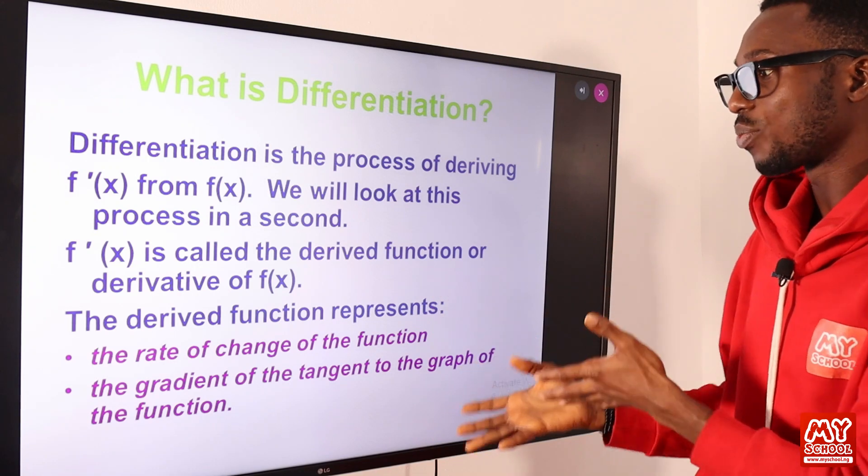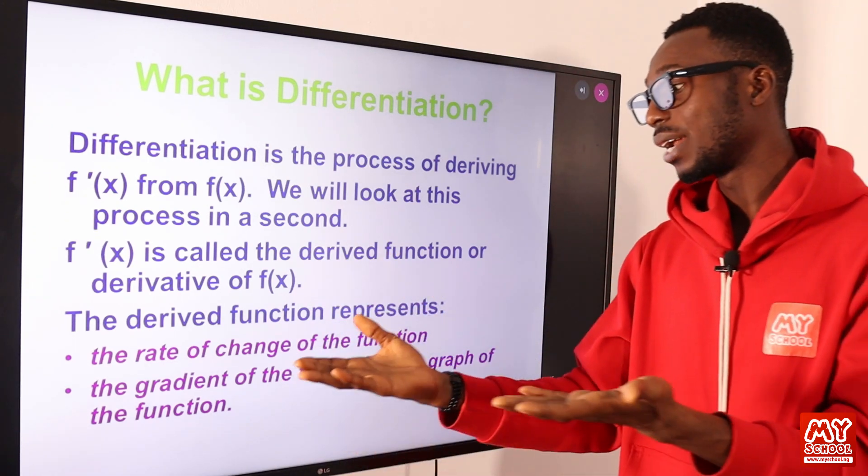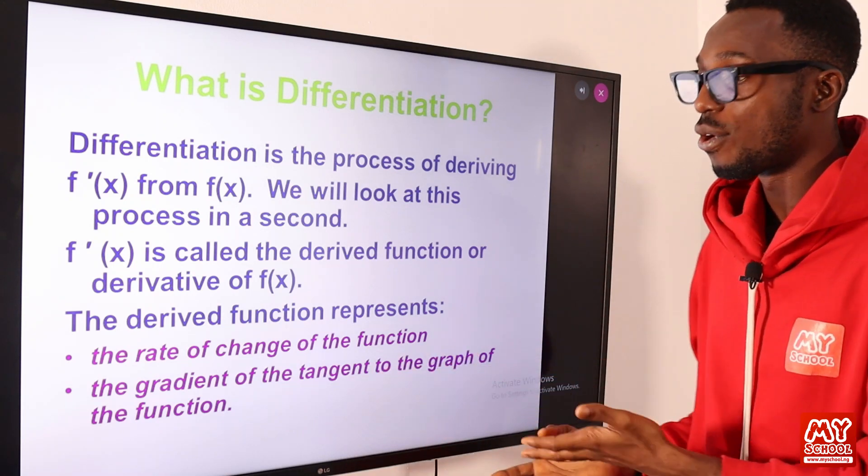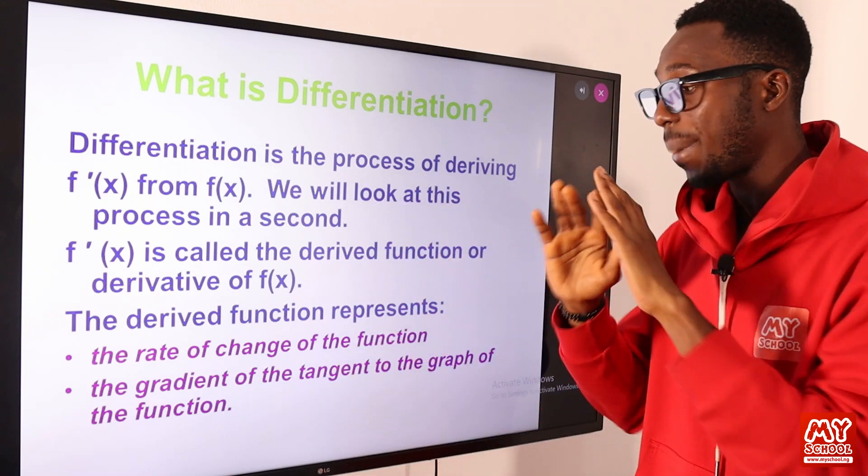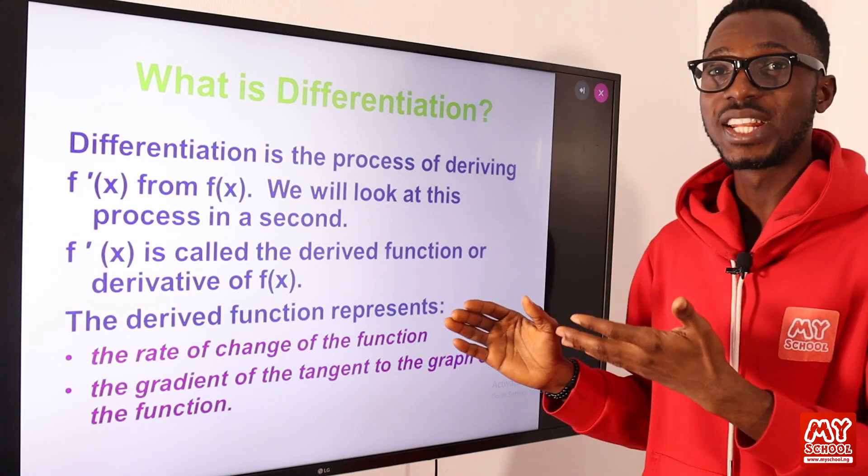The derived function represents the rate of change of the function, or we can also put it as the gradient of the tangent to the graph of the function. This can be well painted out when we are using a graphical illustration.